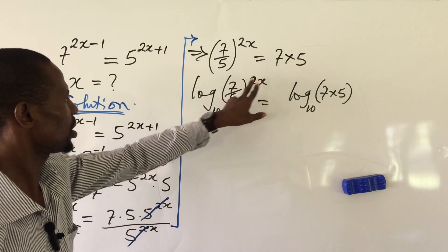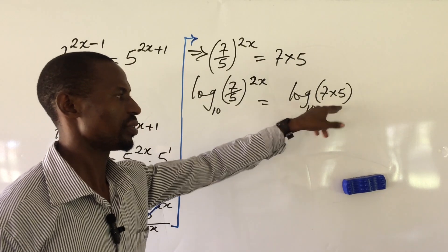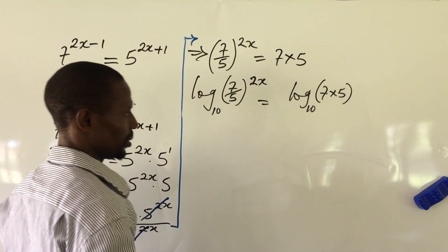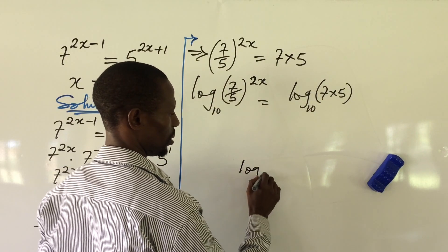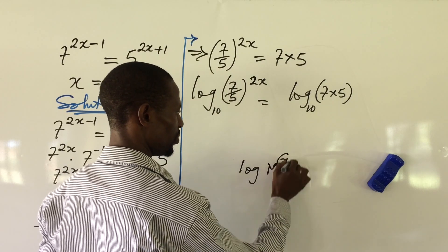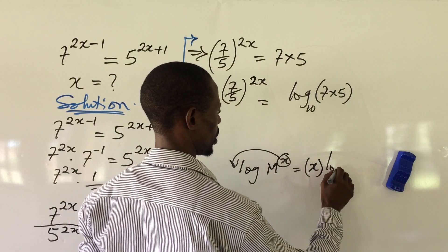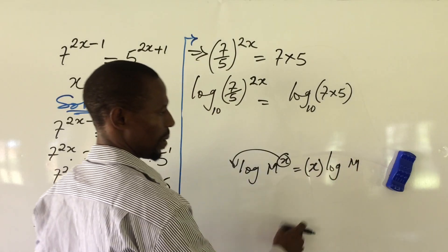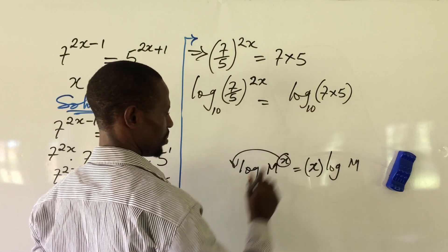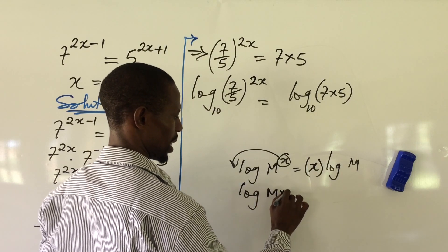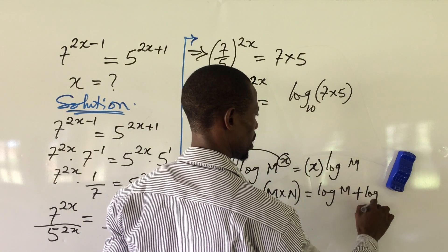Now, according to the law of logarithms, we move this power back. We also apply the multiplication law of logarithms to the right-hand side. The power law says that if you have log m to the power of x, you move this power backward, giving you x times log m, base 10. The multiplication law says that log of m times n equals log m plus log n.